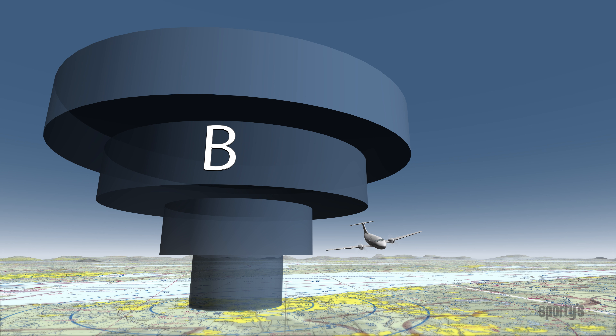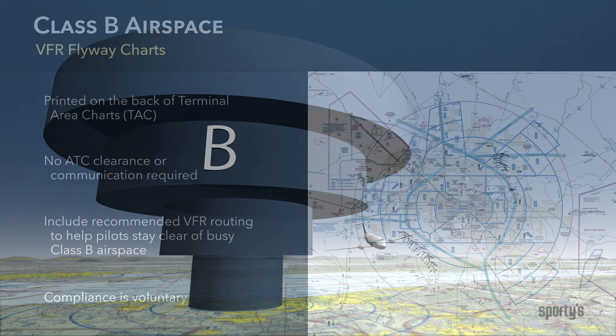The FAA has published routes to aid pilots flying under, around, and through complex Class B airspace. These are VFR flyways, VFR corridors, and Class B airspace transition routes.